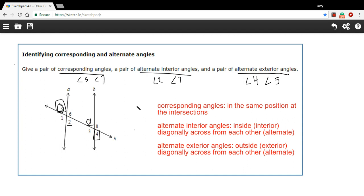So that is a little bit of work with some of the terms for the types of angles you get in this figure where two lines are crossed by a transversal.